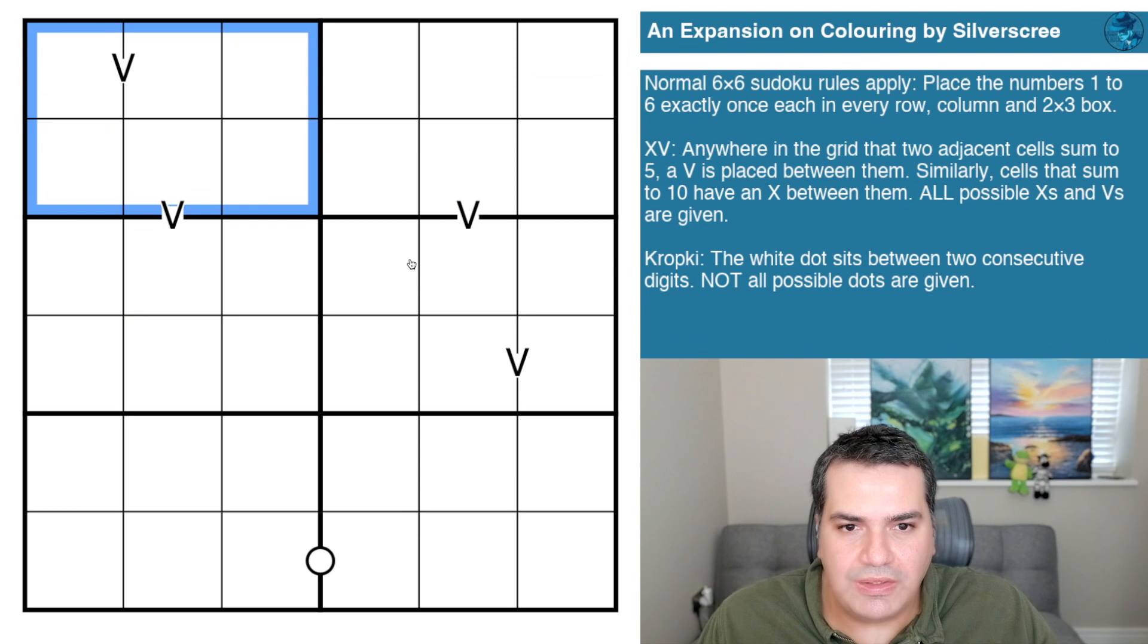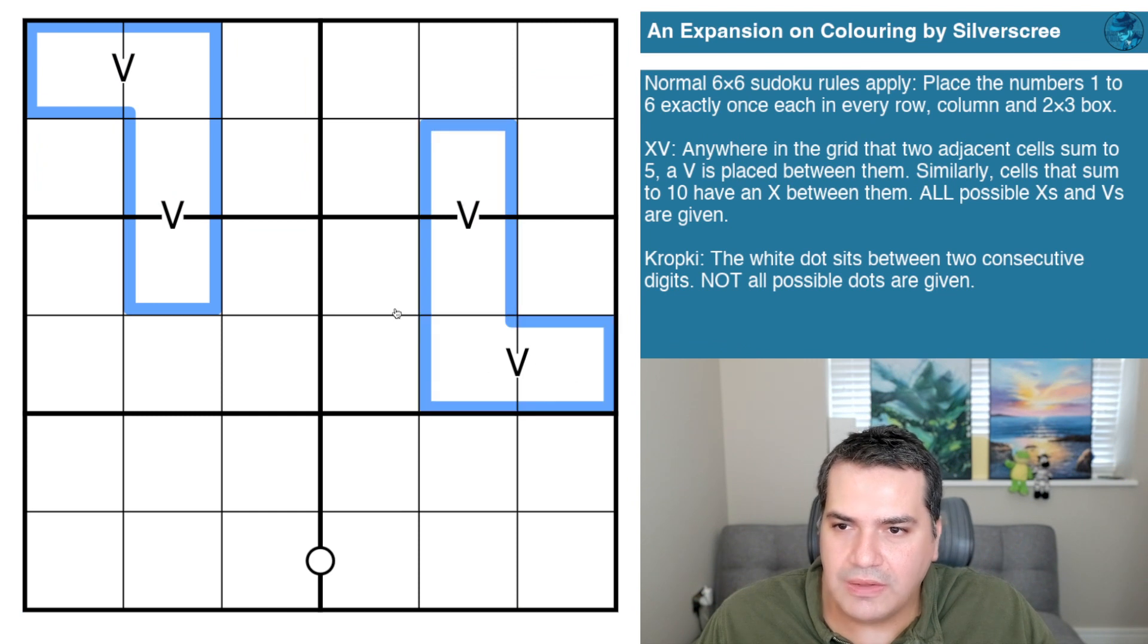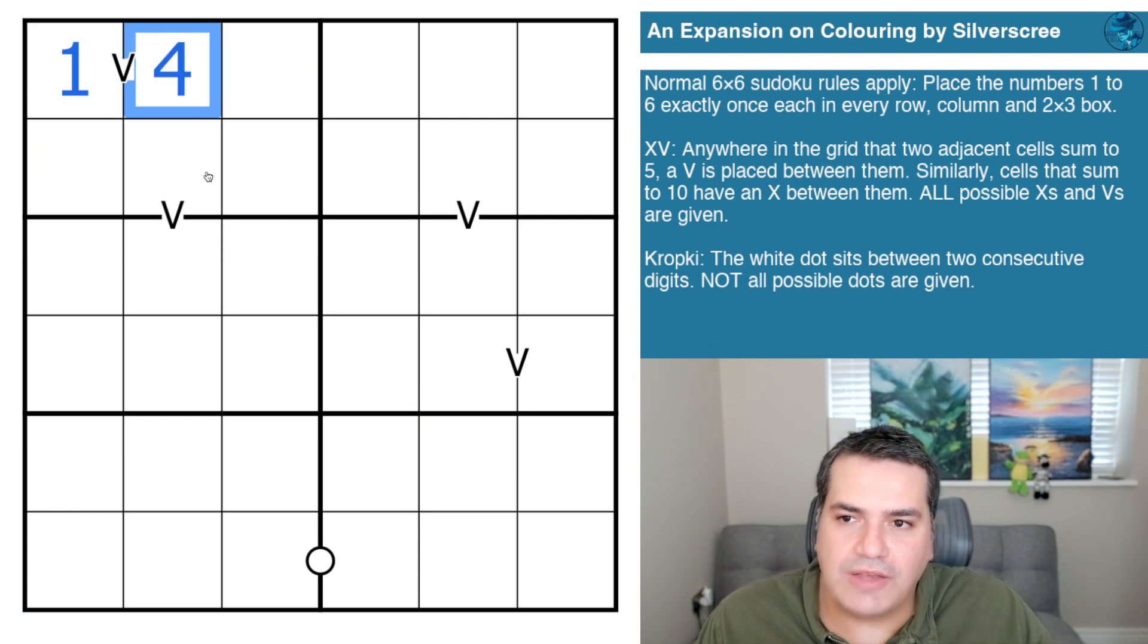We also have XV. Anywhere in the grid that two adjacent cells sum to five, a V is placed between them. You can see examples here, here, there. Essentially, if this is a one for example, then this has to be a four to add up to five.